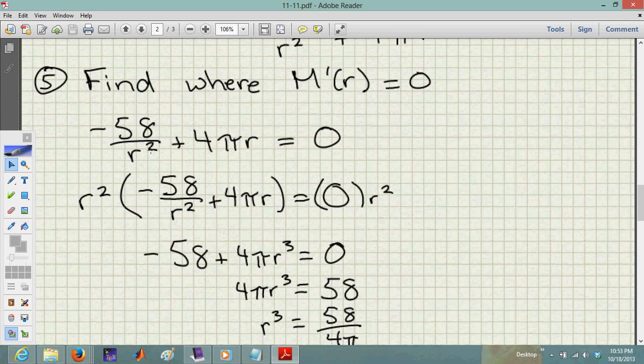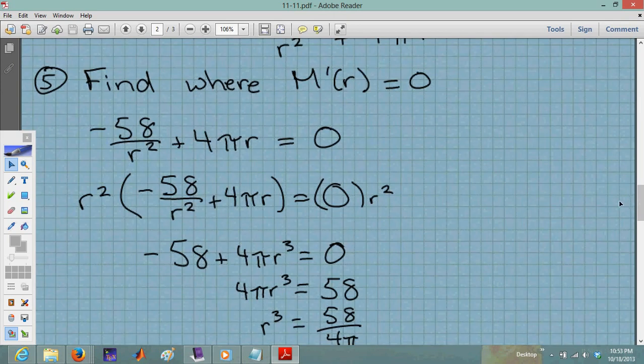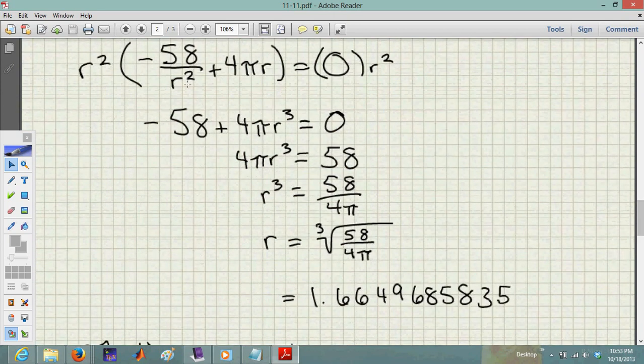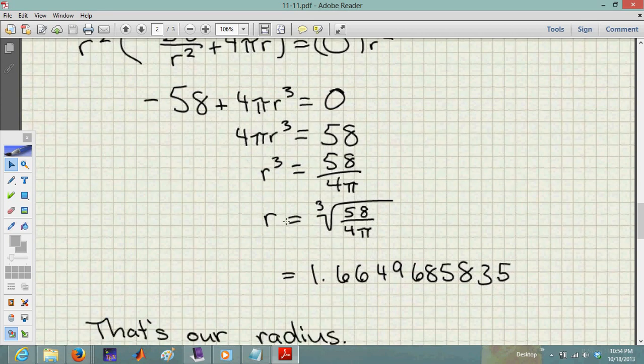-58/r² + 4πr = 0. Multiply both sides by r² to get -58 + 4πr³ = 0. Simplifying gives 4πr³ = 58, so r³ = 58/(4π), which means r = ∛(58/4π).